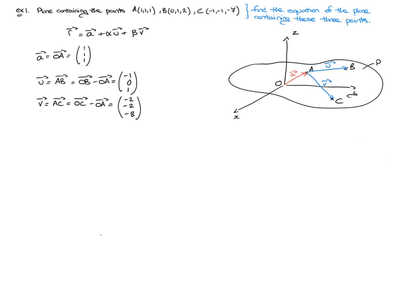And there we go — we're pretty much done. Using the fact that the vector equation of a plane will be R equals A plus alpha U plus beta V, we can go right ahead and write the equation of this plane in component form.